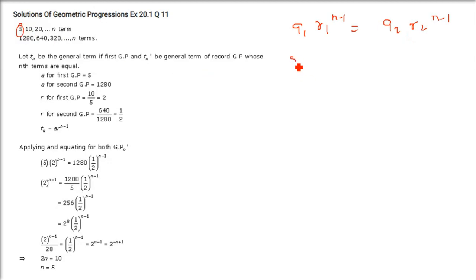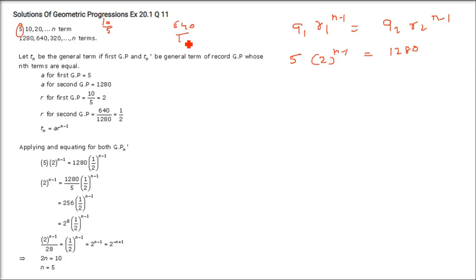For the first GP, a₁ = 5 and r₁ = 10/5 = 2. For the second GP, a₂ = 1280 and r₂ = 640/1280 = 1/2. So we have 5·2^(n−1) = 1280·(1/2)^(n−1).